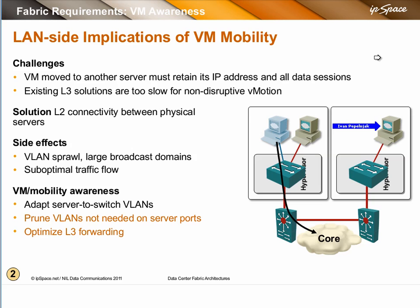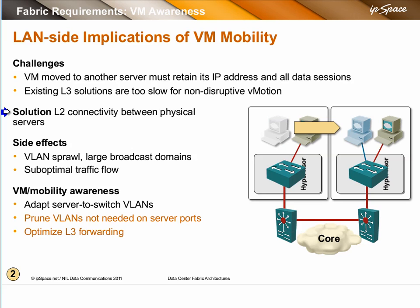That means the VM has to be in the same subnet. There are some layer 3 solutions we could use, but they are too slow for really non-disruptive vMotion — it still takes a few seconds for IP routing protocols to converge. So the only solution we have today is layer 2 connectivity between physical servers. When a VM moves, on the other side it has to be in the same VLAN, which means every server on which this VM could potentially land has to be in the same VLAN as the originating physical server. This results in real VLAN sprawl with large broadcast domains, plus you might get suboptimal flow.